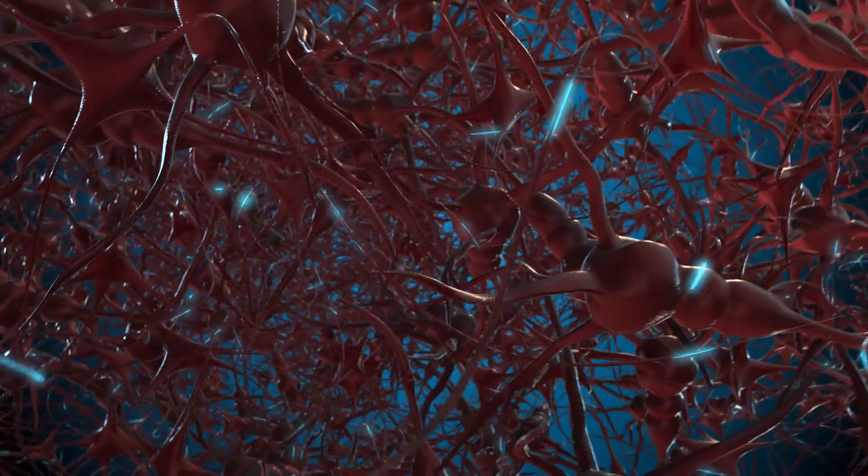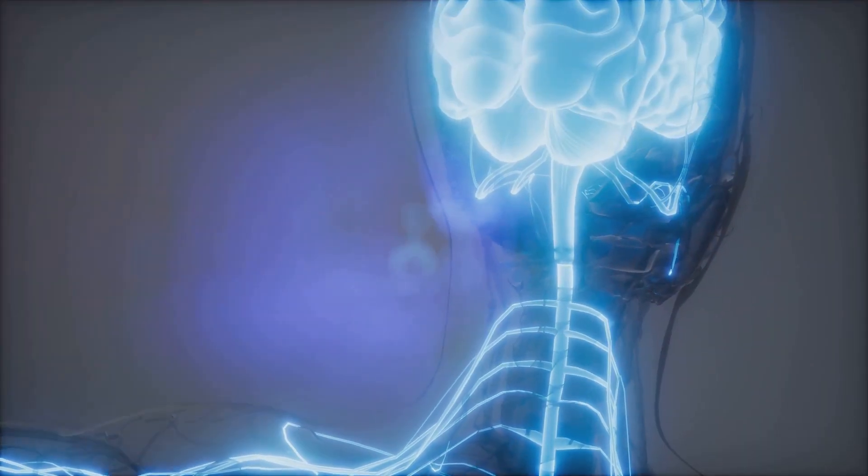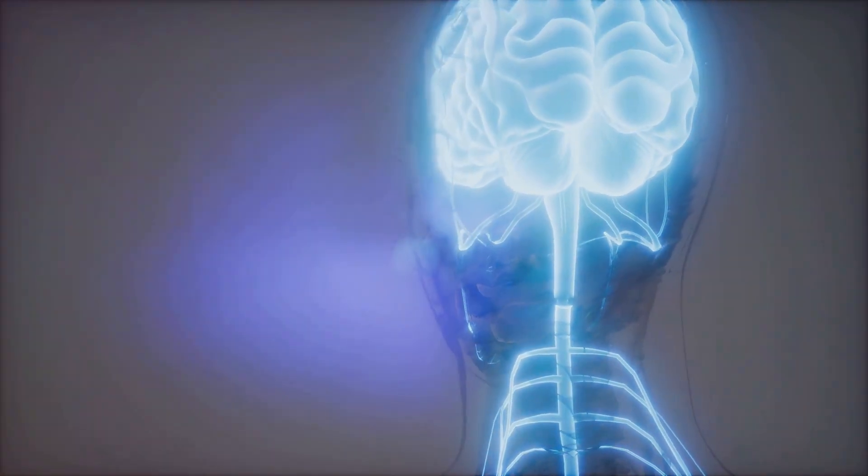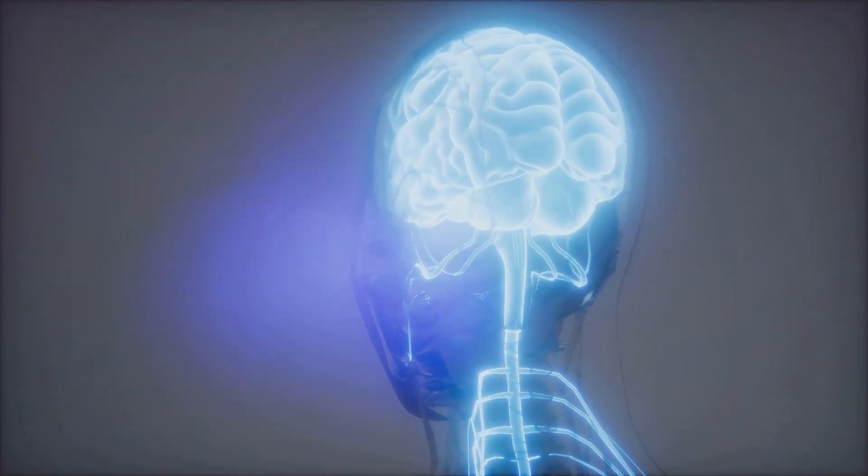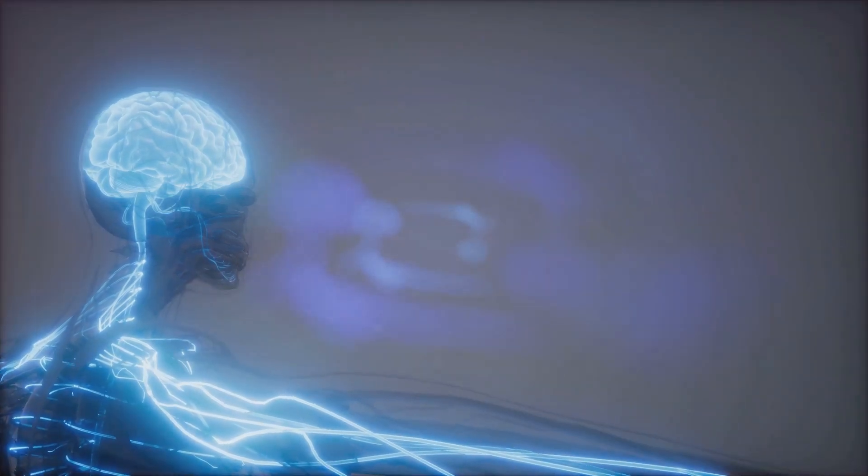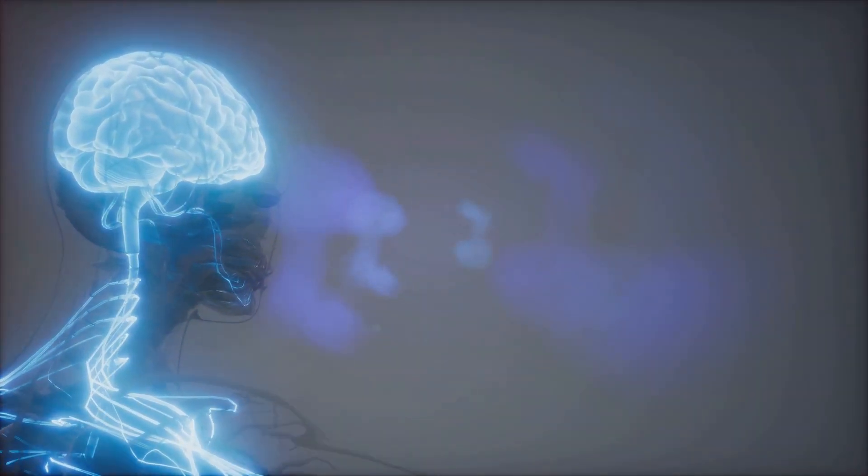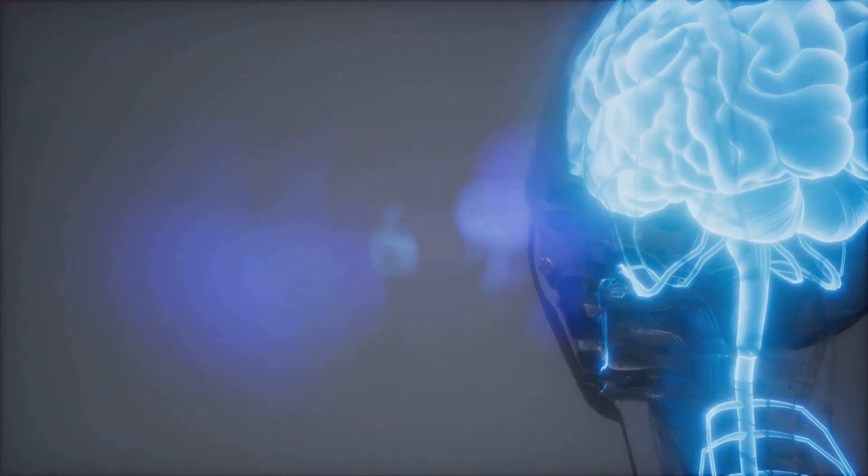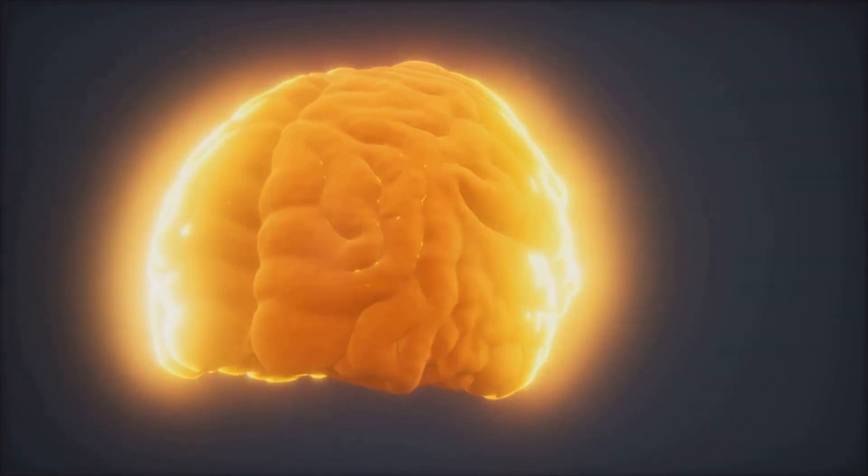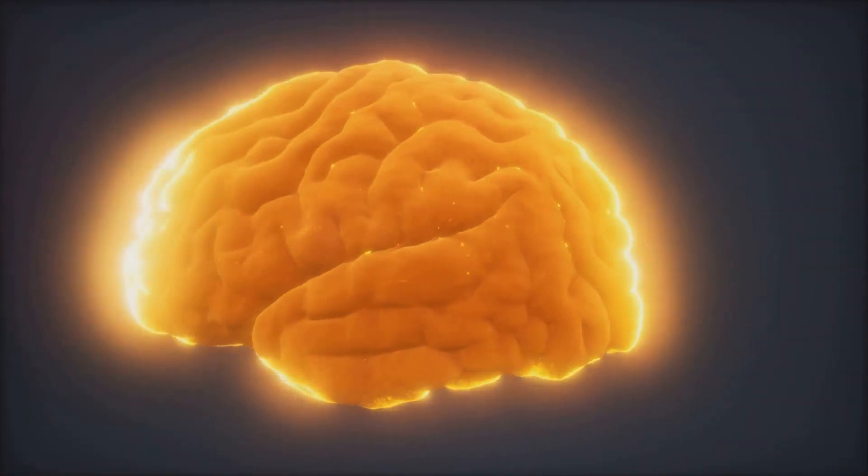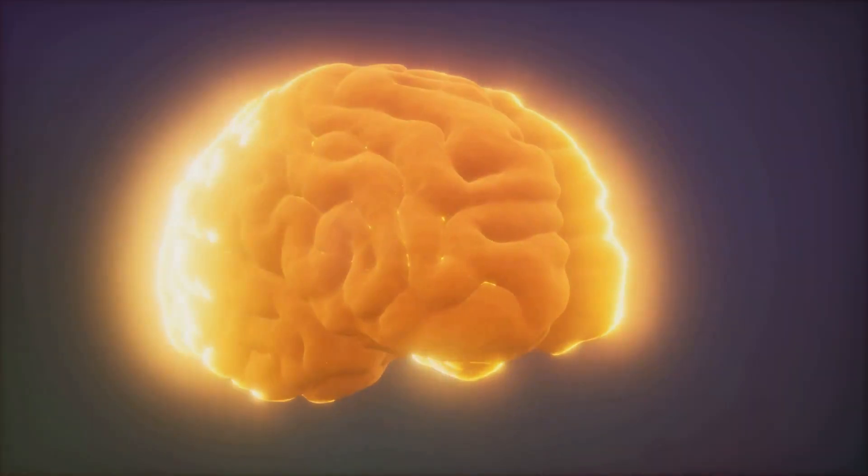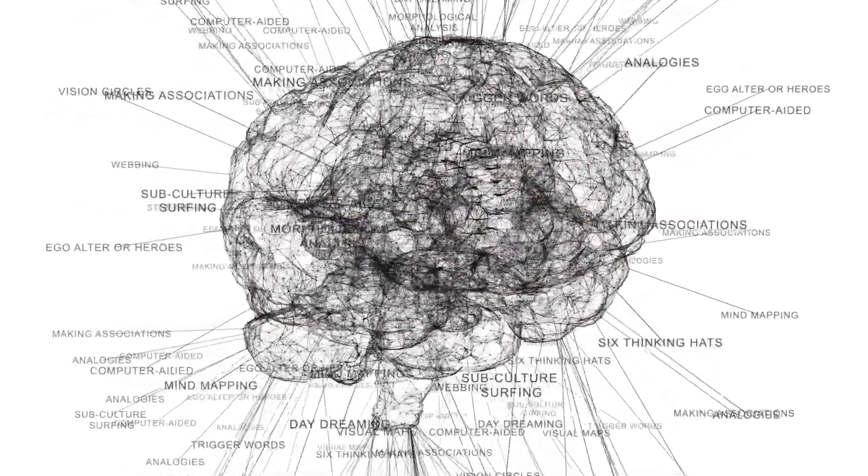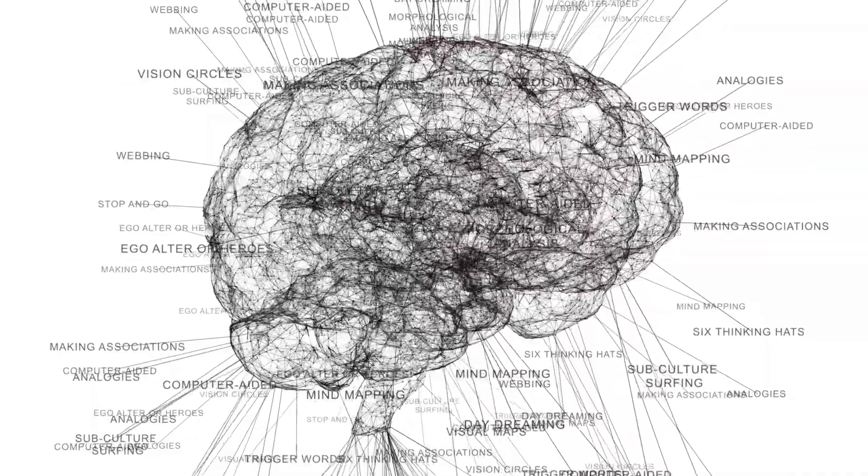The block universe theory, if true, would have profound implications for how we view our lives and choices. In a block universe, your future actions are as fixed as your past ones. This might seem to challenge the idea of free will. However, it doesn't necessarily mean your choices don't matter. Your decisions are still yours, even if they're already part of the block. Consider how this perspective might change your approach to regret or anxiety. If all moments exist equally, dwelling on past mistakes or worrying about future events might seem less significant. Each moment, including your current experience, is an equally real part of the block universe.